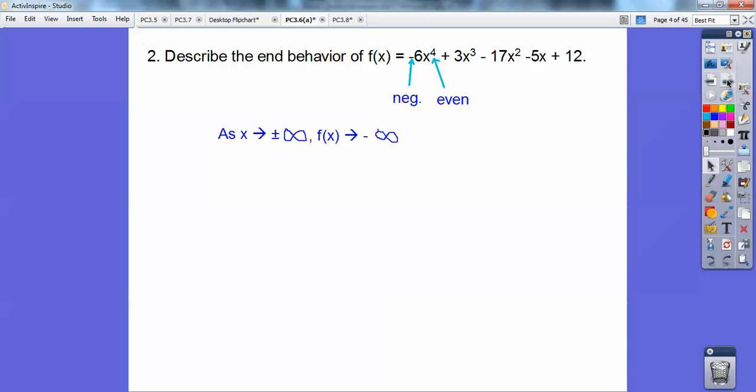So describe the end behavior. All I've got to know is what's the degree of this polynomial? It's even. So that means it's either going to be a touchdown or an upside-down touchdown. And since that's negative, it's an upside-down touchdown. So as x goes to negative infinity and positive infinity, f of x is always going to an upside-down touchdown, which is negative infinity. So your y always goes down. It starts at the bottom over here and ends at the bottom over here.